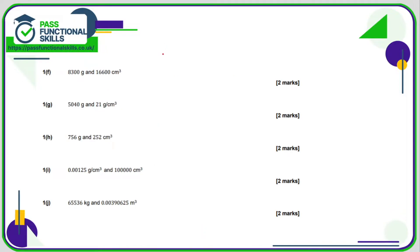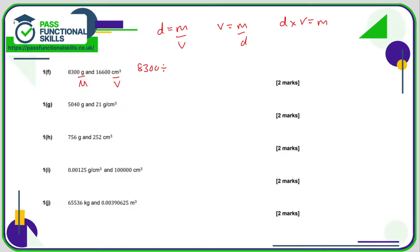Let's just refresh our knowledge of the formulae. Density is mass over volume; swap the D and the V, so V equals M over D, and density times volume equals mass. Here we've got a mass and a volume, so we want the density. Density is the mass divided by the volume, and that works out as 0.5 grams per cubic centimetre.